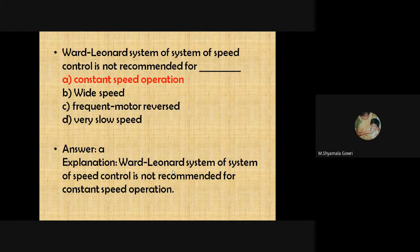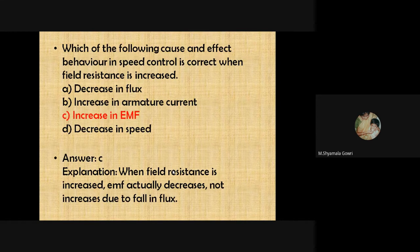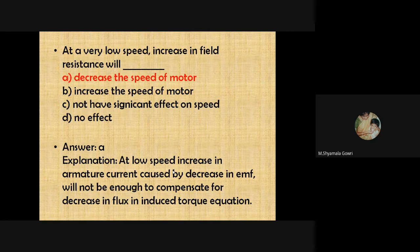The Ward-Leonard system of speed control is not recommended for constant speed operation. When field resistance is increased, EMF actually decreases — so the wrong option would be 'increase in EMF.' At very low speed, increasing field resistance decreases the speed of the motor. The decrease in armature current caused by the decrease in EMF is not enough to compensate for the decrease in flux in the induced torque equation.